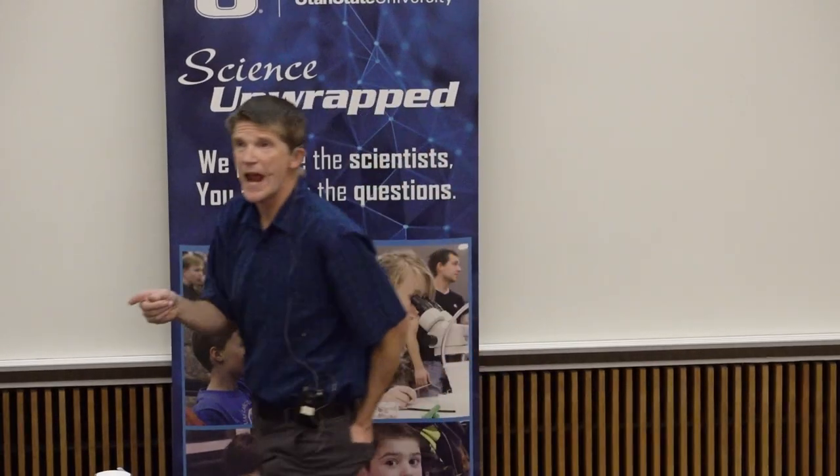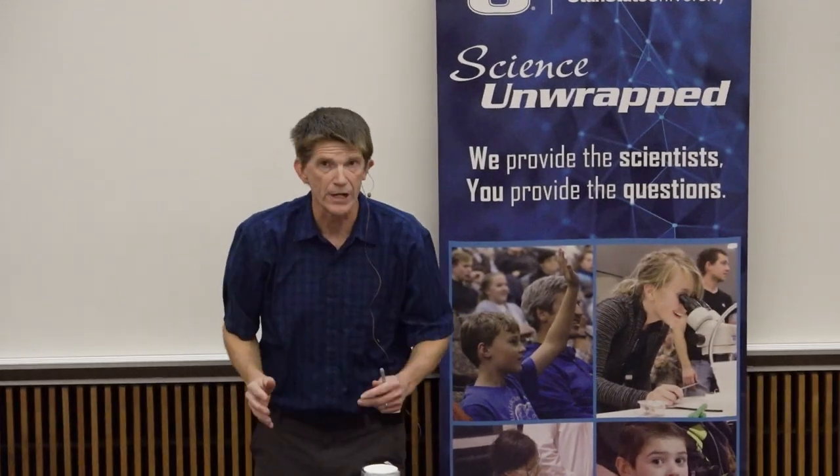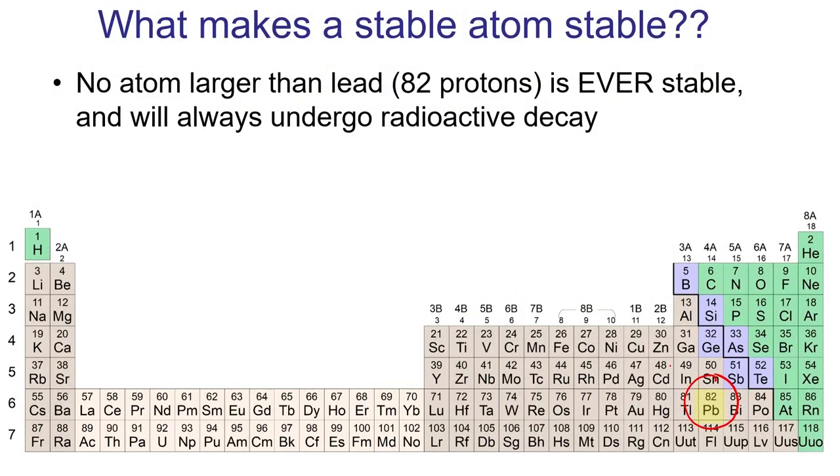So let's talk about something else that makes an atom stable and that has to do with size. It turns out that no atom has ever been shown to exist that has more than 82 protons for which an isotope exists that makes it stable. Any atom with more than 82 protons will always undergo radioactive decay. So which atom in the periodic table has 82 protons? It's this guy right here, lead. So lead is the largest stable atom that can exist.